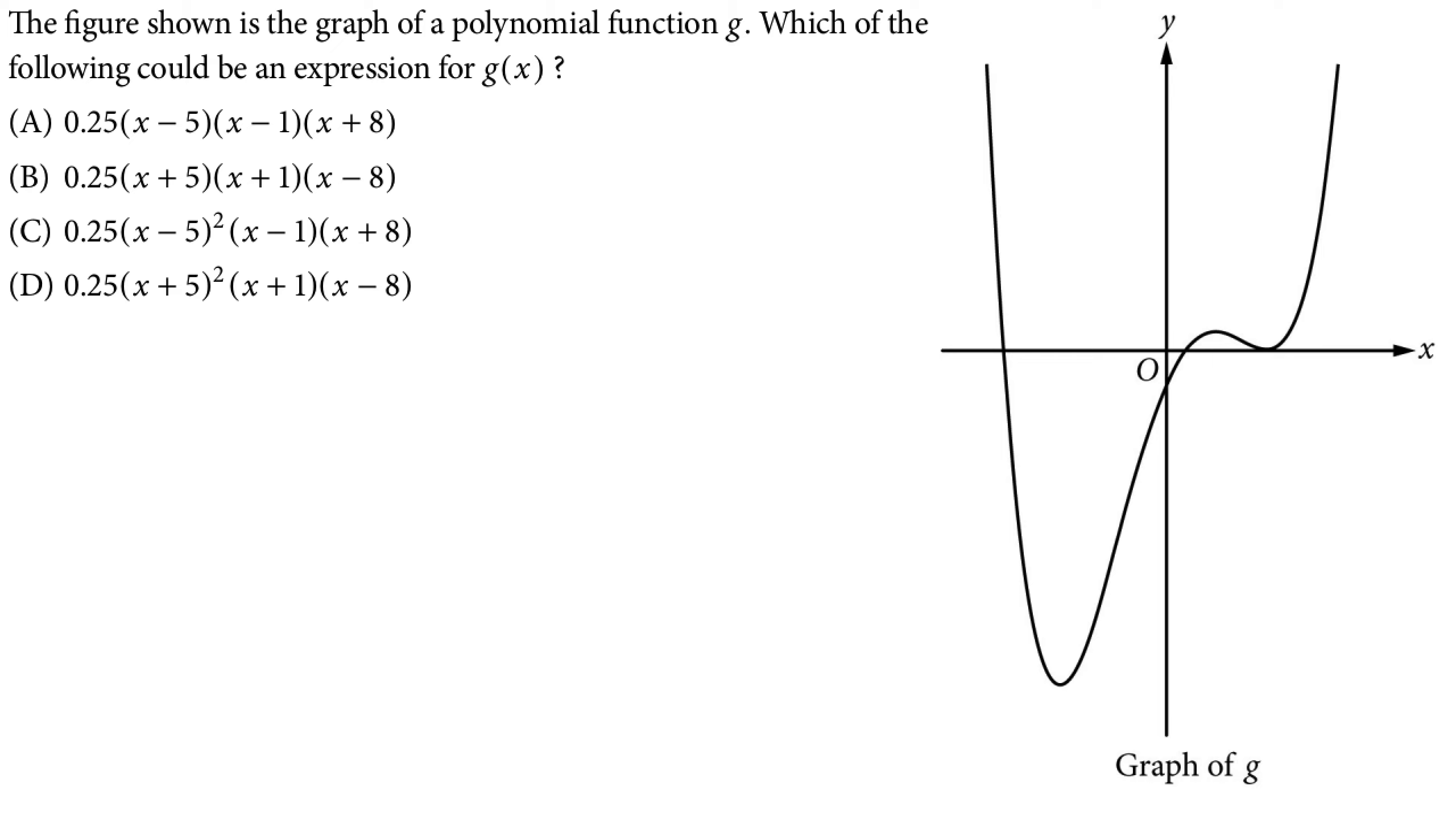In this problem we're going to look at some of the behavior of a polynomial function in factored form, looking at some zeros, looking at some end behavior. So we see that the figure is shown the polynomial function g. Which of the following could be an expression for g?